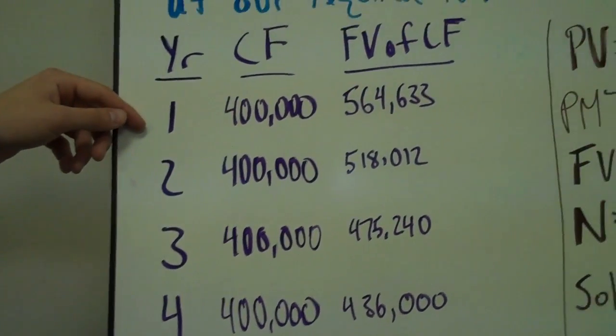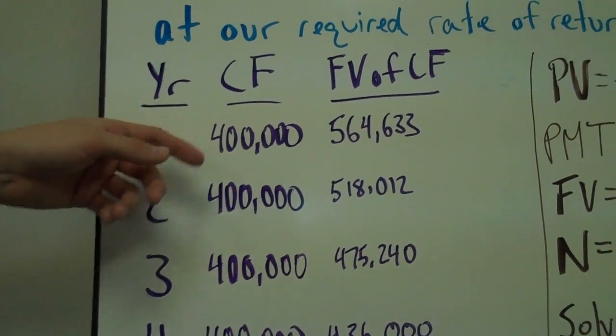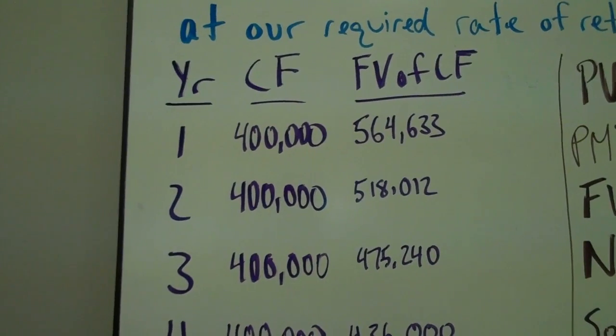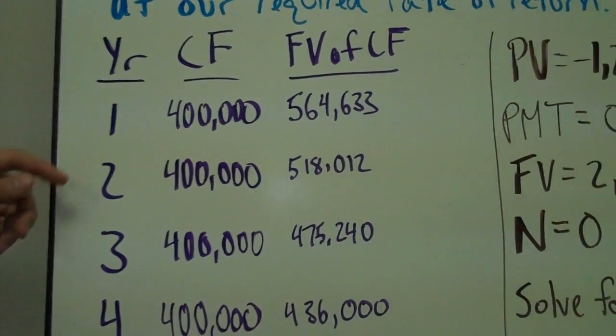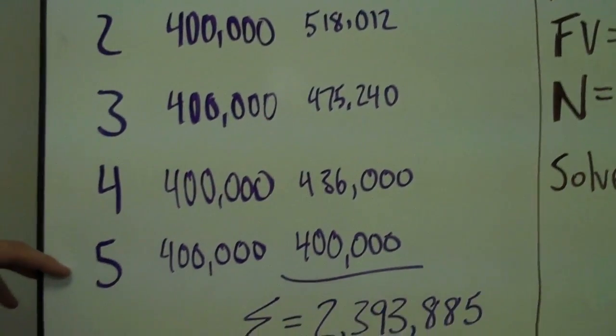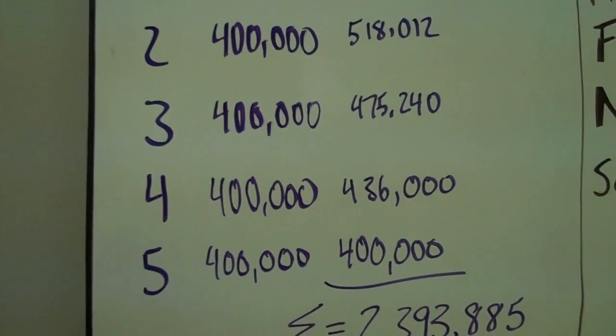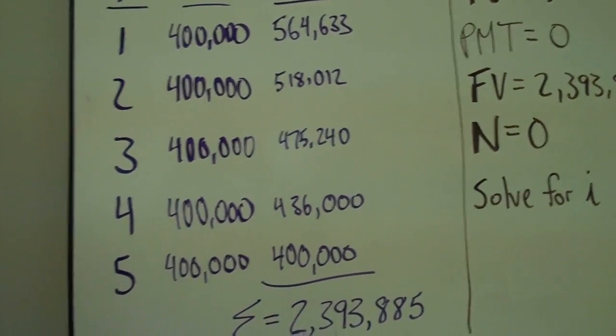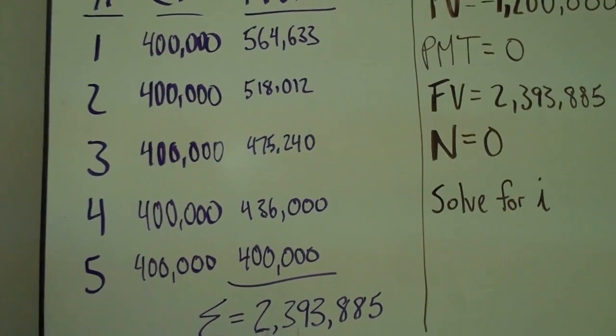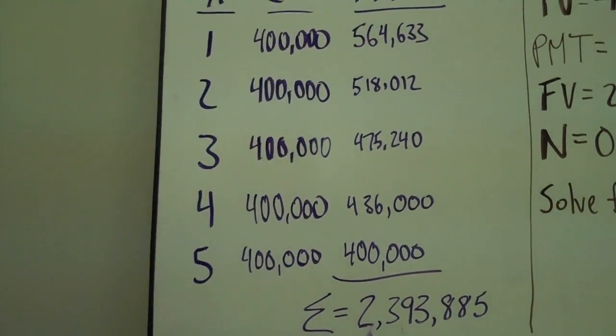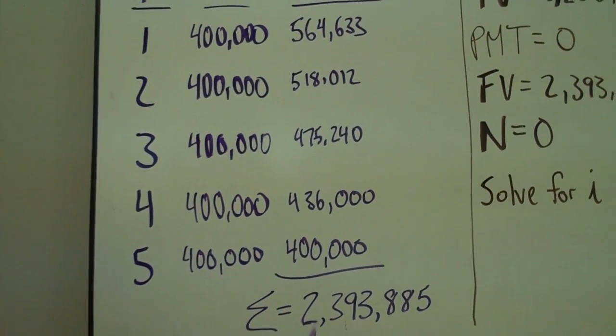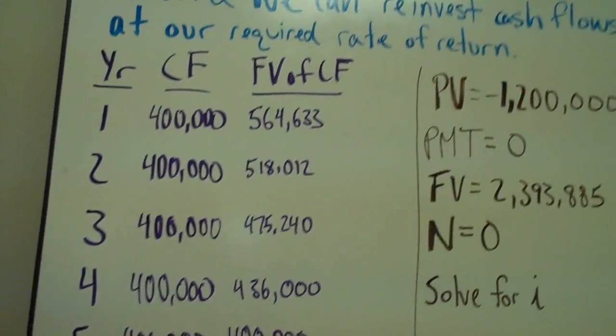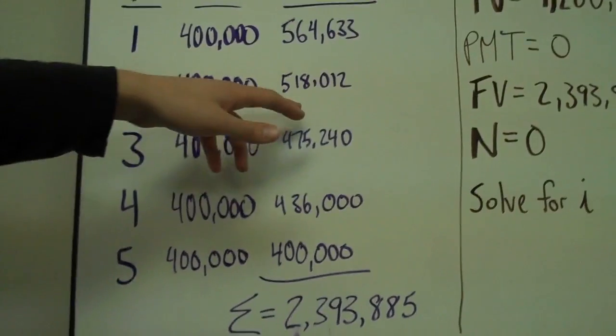So for example, at the end of the first year, we are getting our cash flow of $400,000. We are assuming that for the next 4 years until the project is over with, we can invest that $400,000 at 9%. So we take the future value of $400,000 for 4 years and this is what we get right here, $564,633 and then so on and so forth.